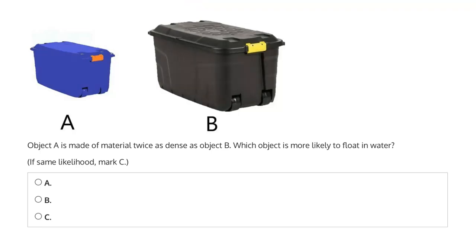So this question says, object A is made of a material twice as dense as object B. Which object is more likely to float in water? Object A, the blue bin on the left? Object B, the black bin on the right? Or if the same likelihood, then mark C?